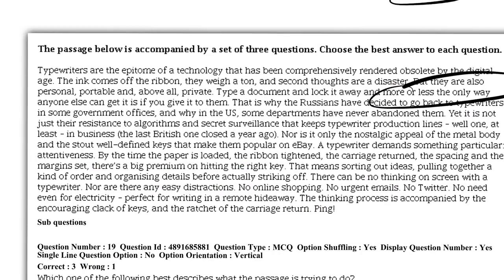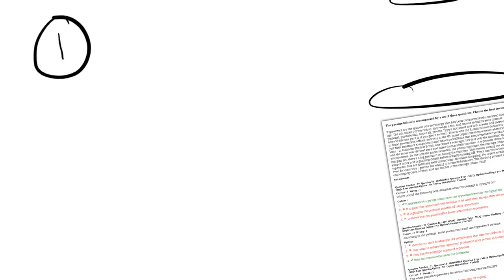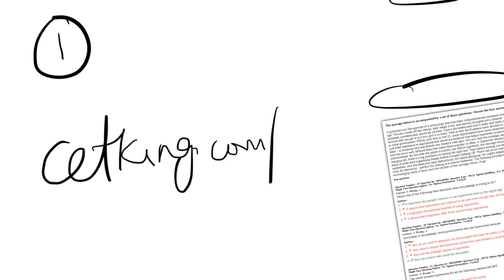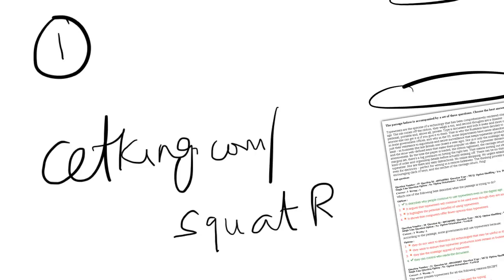This is a new kind of question which has come in the CAT exam, so how do you practice it? If you're a cetking student, all your books, mocks, and lectures are already updated as per this new paper pattern. Otherwise you can also go to cetking.com where you can go through the 12 kinds of questions you can expect in the exam for SQUAT RCs — the full list is available there.